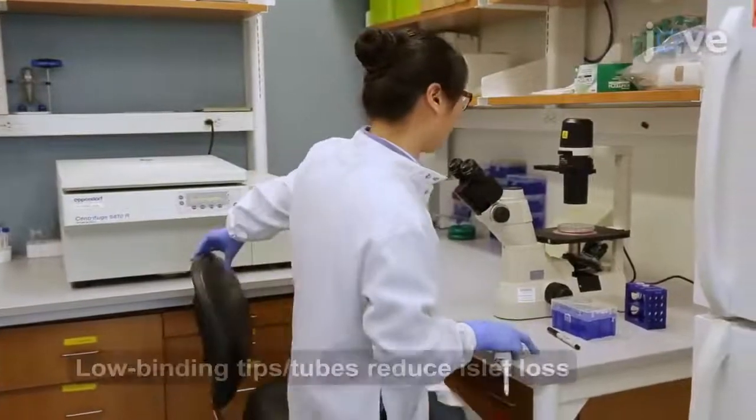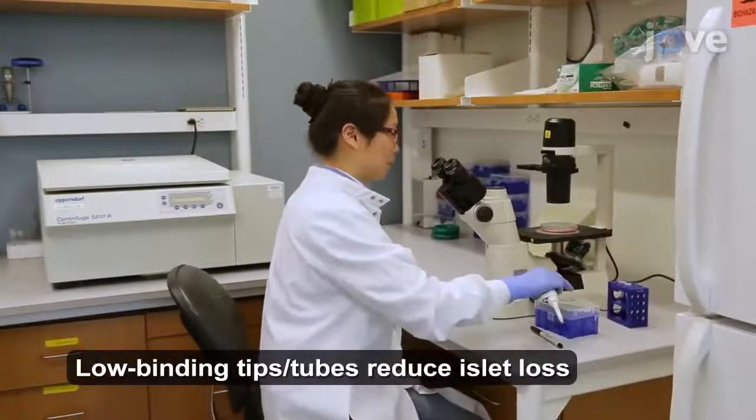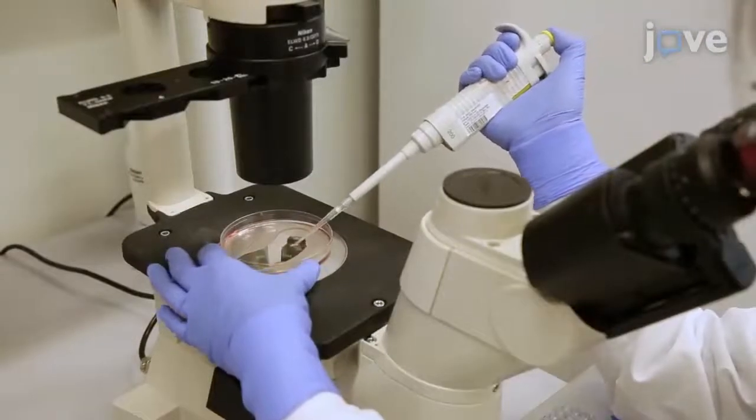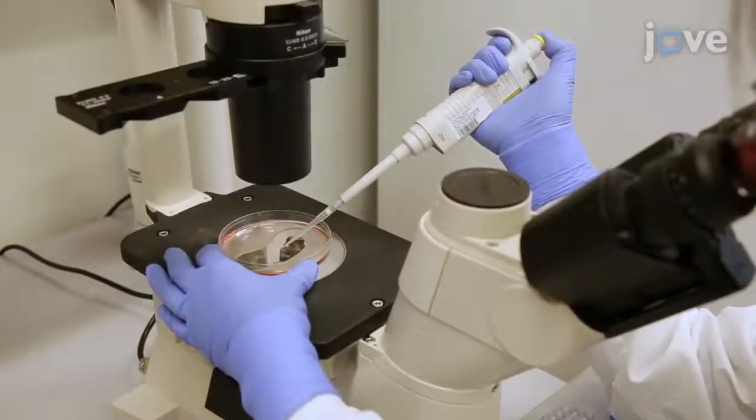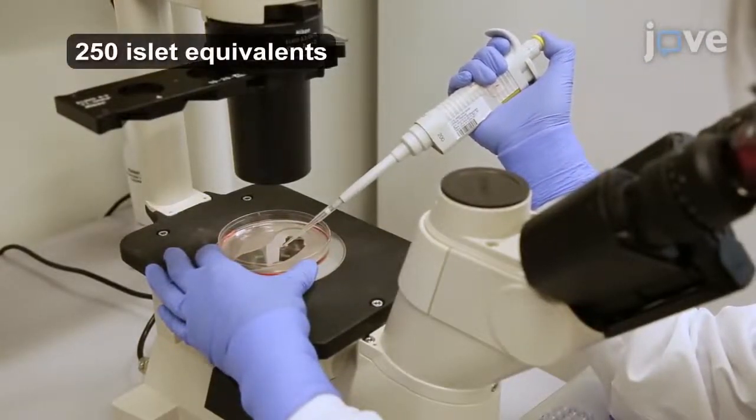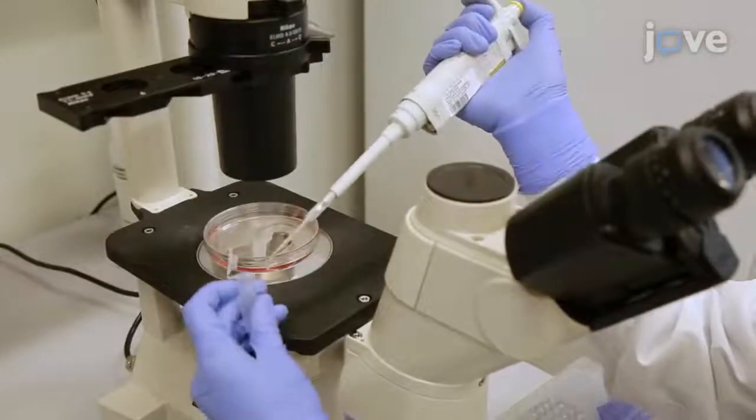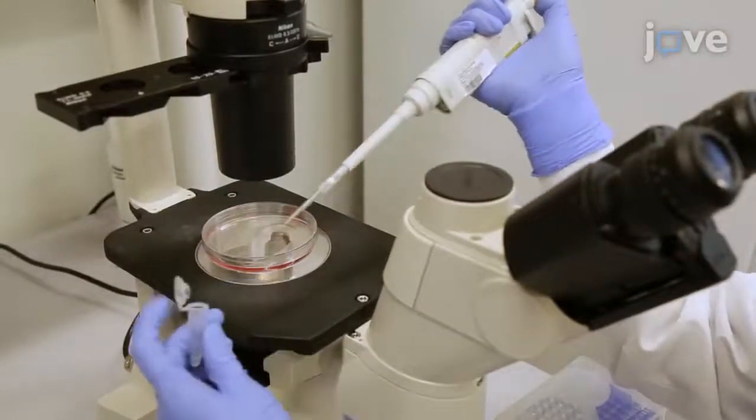To begin this procedure, use a low-binding P200 pipette tip and a calibrated grid under a stereomicroscope to handpick 250 islet equivalents, transferring them into each 1.5-milliliter low-binding microfuge tube.